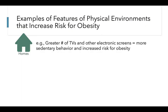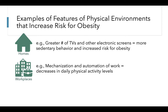Some features of physical environments that increase risk for obesity can be identified in our homes, workplaces, and stores that we shop in. Within homes, an example of a physical environmental risk factor is a greater number of TVs and other electronic screens. Research has shown that homes with more TVs and electronic screens have residents who are more sedentary and more likely to have a higher weight status. Within workplaces, an example of a physical environmental risk factor is greater mechanization and automation of work, which means that workers experience decreases in their daily physical activity levels.